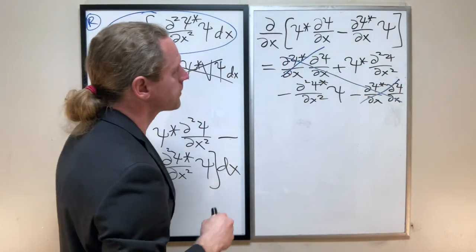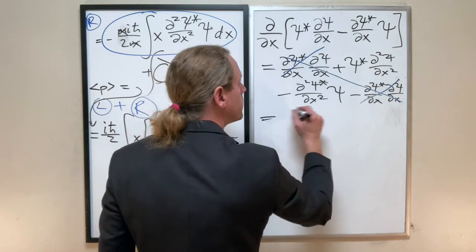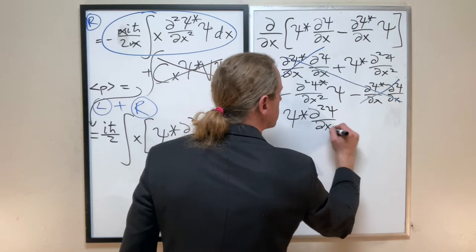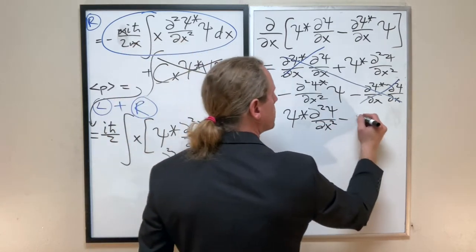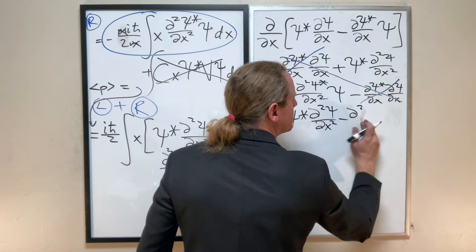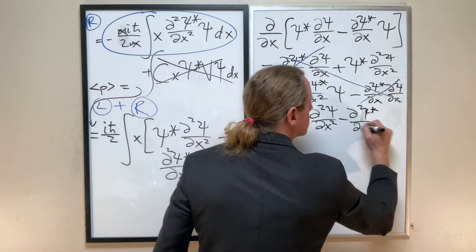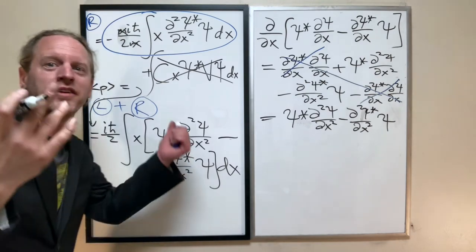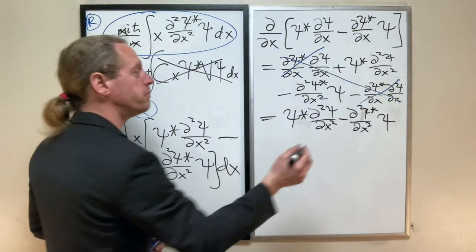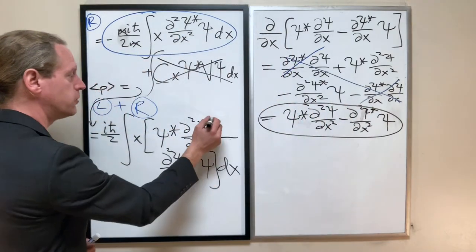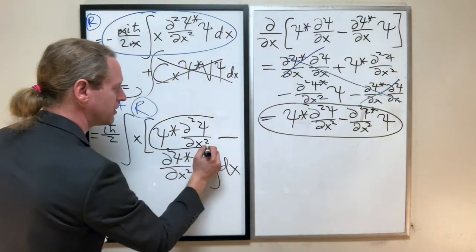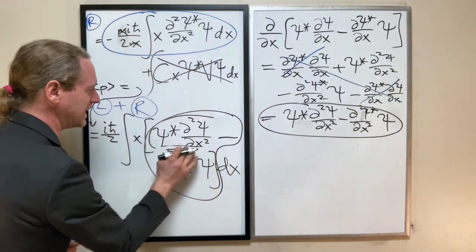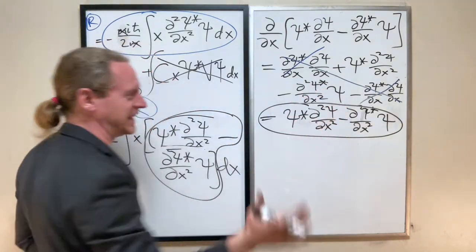And do you see why we did that? So this just becomes ψ* d²ψ/dx² minus d²ψ*/dx² times ψ. And why is that useful? Well, because this is precisely the integrand of this thing here. This thing matches that thing is the whole point.